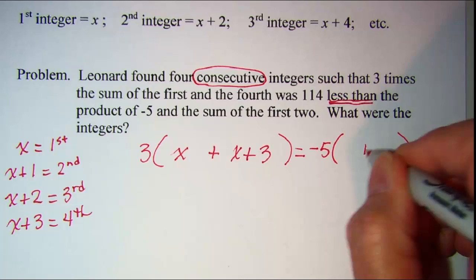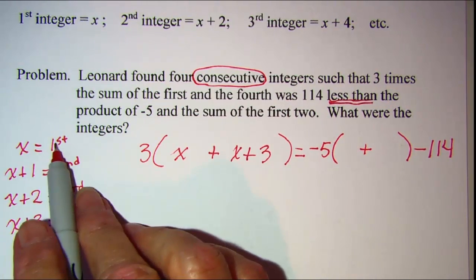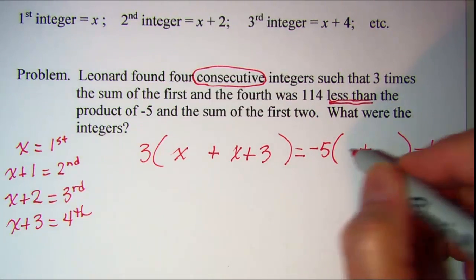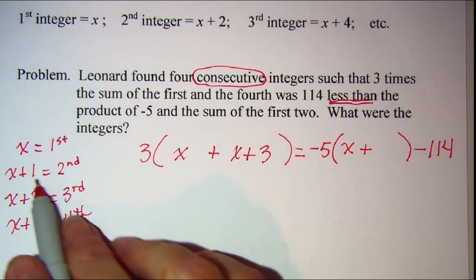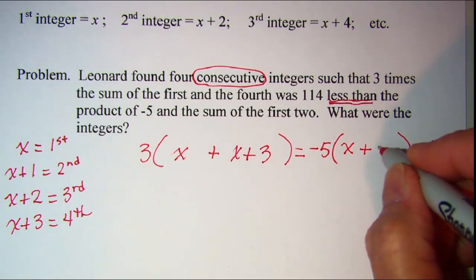So I'm adding together the first two integers. So x is my first one and then x plus 1 is my second one.